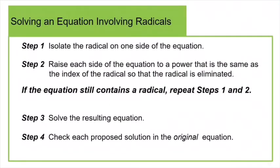So here are the steps involved in solving an equation that has radicals. Step one: isolate the radical on one side of the equation. You must make sure that the radical is by itself on one side of the equal mark before you do anything to both sides. After the radical is isolated, raise each side of the equation to a power that's the same as the index of your radical. So if you have square root radicals, you're going to square both sides. If you have third root radicals, you're going to cube both sides.